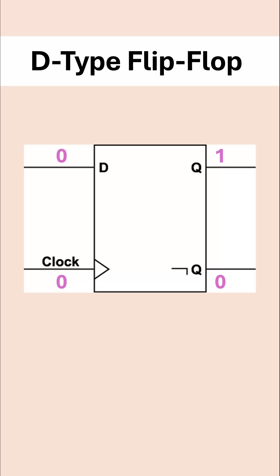Now let's say we want to change the flip-flop to now be storing 0. We put 0 down the data input and we wait for the clock edge to rise. Once the clock edge rises from 0 to 1, we can then change the output. So Q is now 0, and not-Q is now 1.